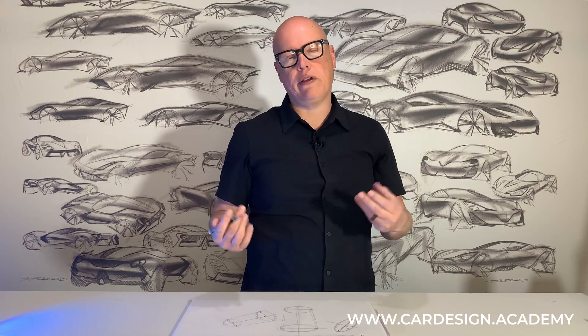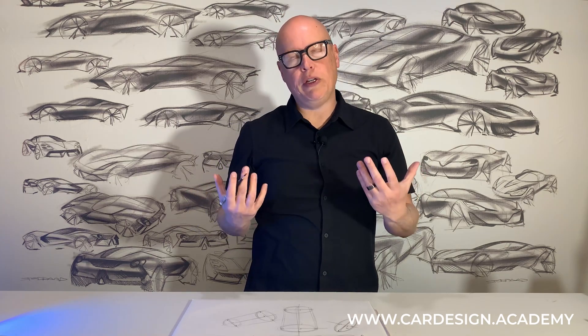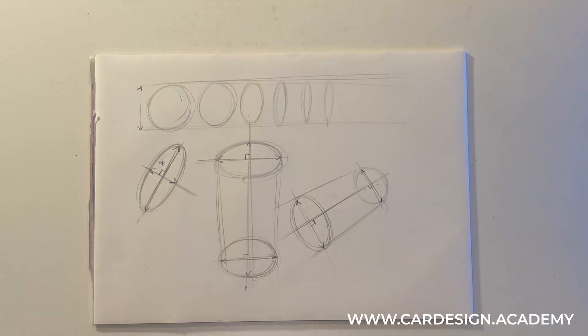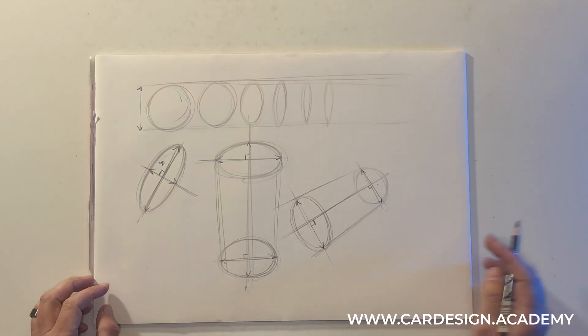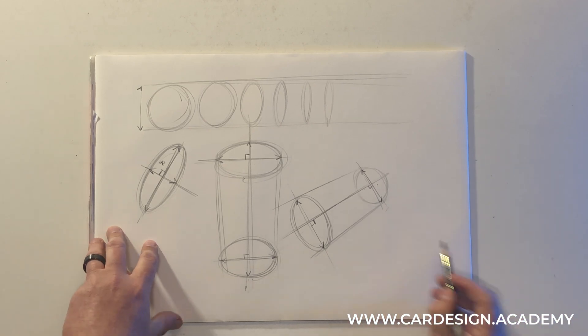Now why is this important? When we're drawing wheels and tires on a vehicle, we're really going to be drawing cylinders. We'll get into that in one of the later lessons. But really, I just want you to understand the science of ellipses.